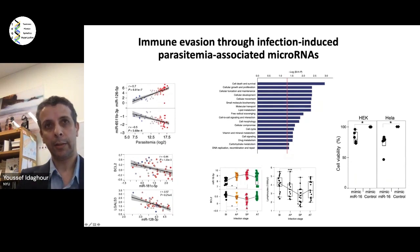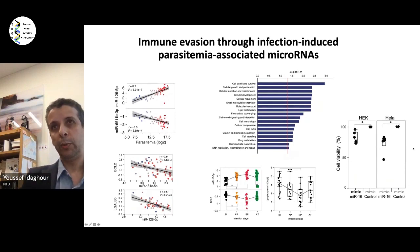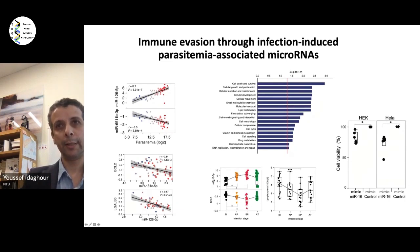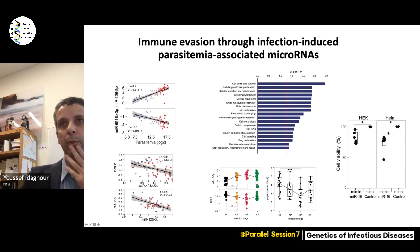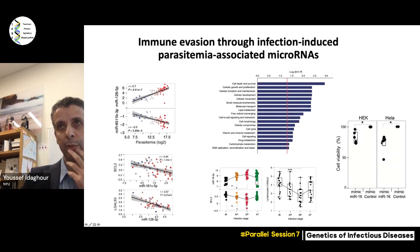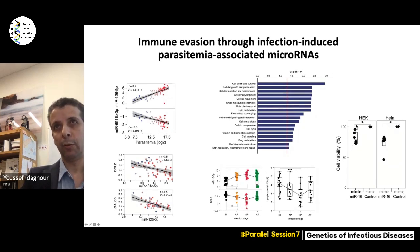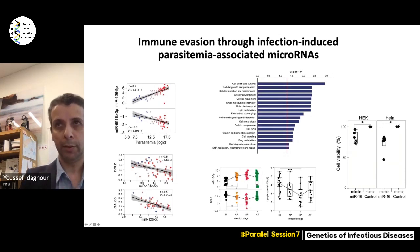We did a follow-up functional assay where we took microRNA-16 and performed a controlled experiment with HEK cells and HeLa cells, where we could show that this microRNA actually triggers apoptosis — as you can see here with cell viability dropping from 100% to about 70% on average.